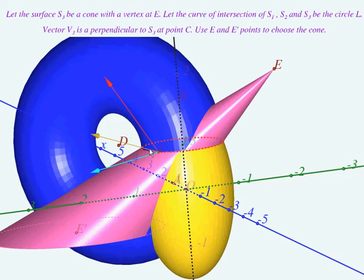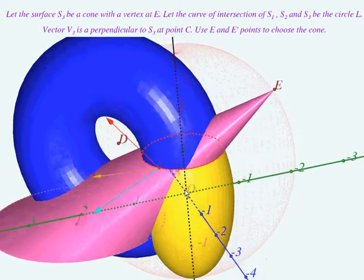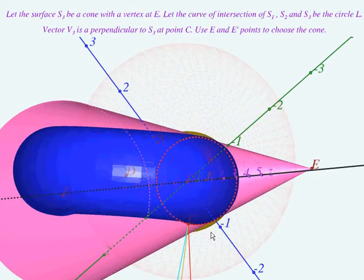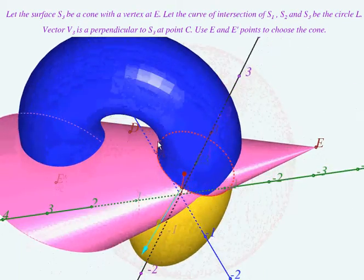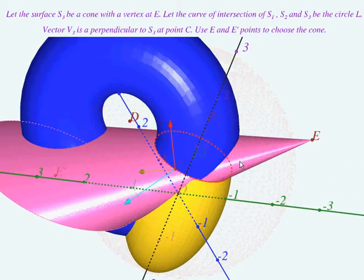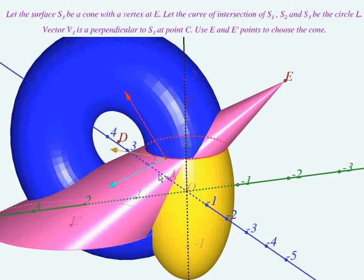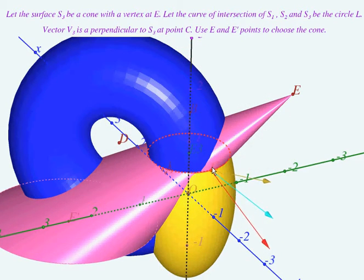The red circle L belongs to each of the surfaces S1, S2, and S3. Point C belongs to the circle L. Vectors V1, V2, and V3 are perpendicular to the surfaces S1, S2, and S3 respectively.